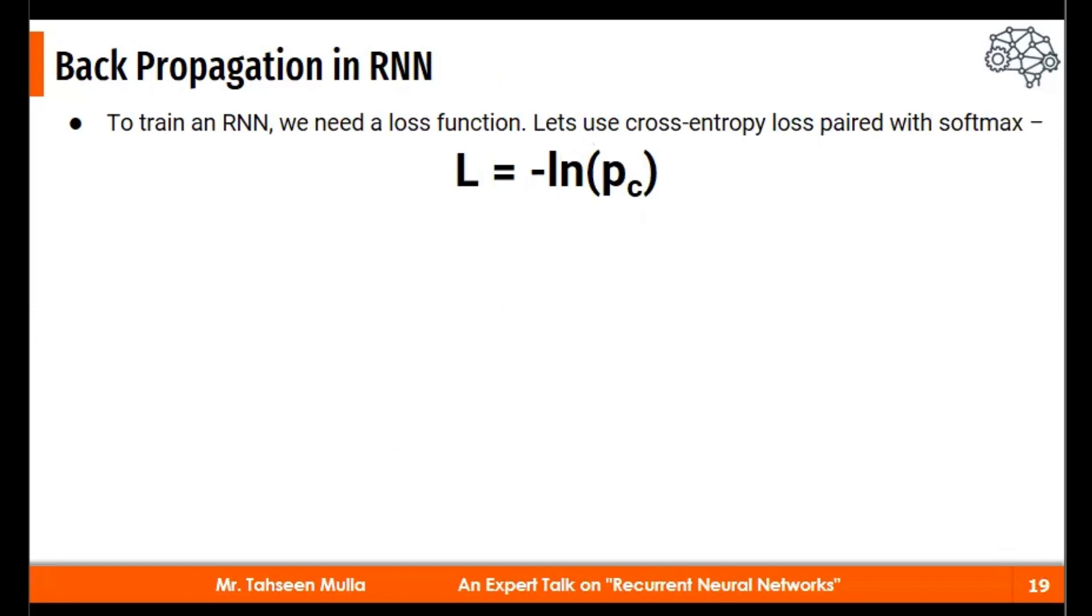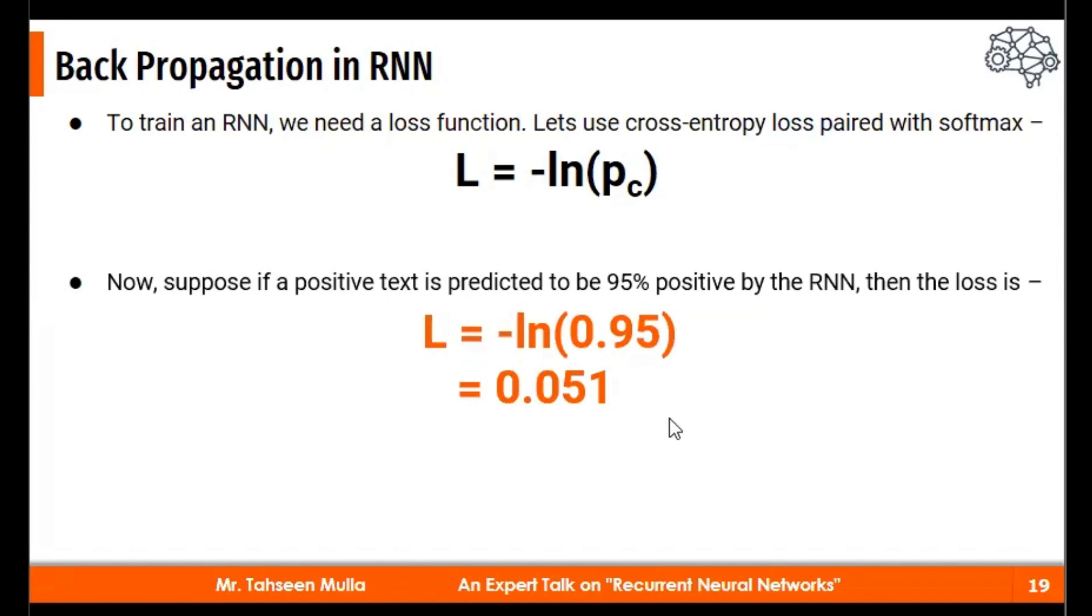Now, this is a small example where we are using a loss function. Loss function will be as stated here. We are using here cross entropy loss paired with soft max function. We have seen those three different functions here. For example, this is the formula stated to train an RNN, we need a loss function. Amongst those three loss functions, you can use any of those. We are going to use this with soft max. Now, suppose if a positive text is predicted to be 95% positive, the prediction is 95% for a positive text by RNN. Then what is the loss? Now, this is the formula how it is given. You may perform this on your calculator. This is an opposite of log LN. So it is 95% will be getting this. Now, what we get here, this as PC. PC is the RNN's predicted probability for the correct class. What correct class we need? Either it is positive or negative. So my correct class is positive.